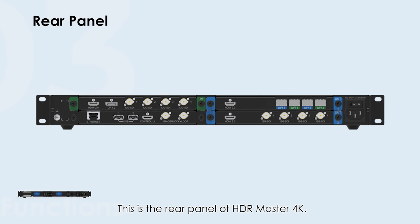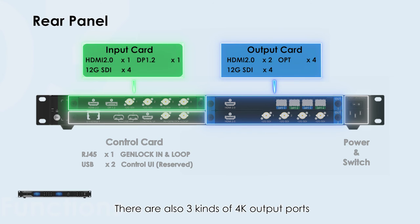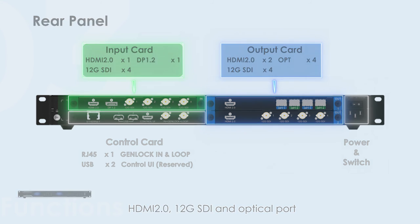This is the rear panel of HDR Master 4K. We can see there are three kinds of 4K input ports: HDMI 2.0, DP 1.2, and 12G SDI. There are also three kinds of 4K output ports: HDMI 2.0, 12G SDI, and optical port.